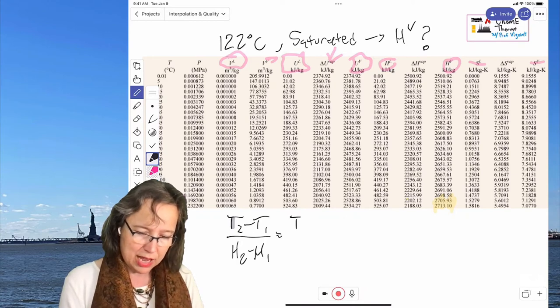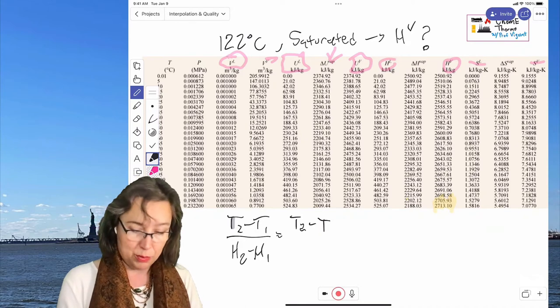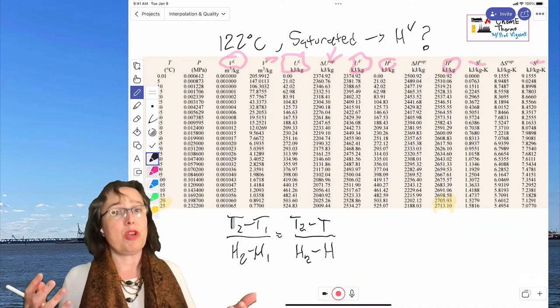And so then on top of that, then that's T2 minus T, that is the temperature we care about, in this case, 122. And on the bottom, it'll be H2 minus H. And that's the enthalpy we're looking for.